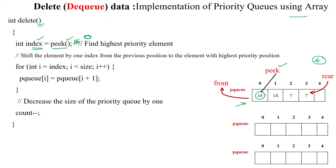Once we access the first value at index zero, it should be removed from the priority queue. To do that, we move the next element into the 0th position, shifting all elements one position back. We use a for loop where index starts at zero and i goes while i is less than the array size of four, shifting elements using i plus one.